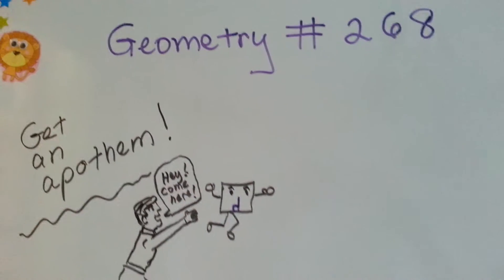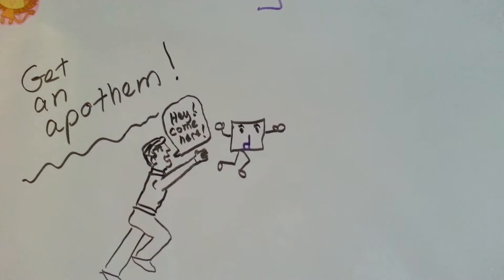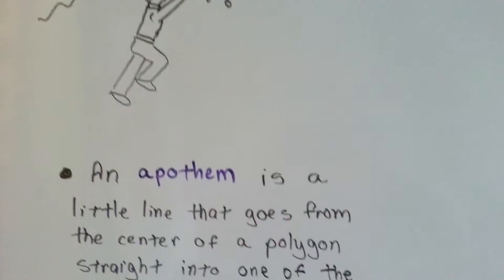Geometry number 268, get an apothem. We're going to try to catch that elusive, wild, sneaky apothem. I'll show you how.